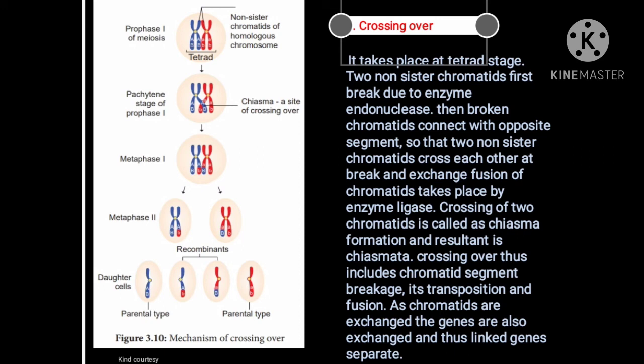A fusion of chromatids takes place by the enzyme ligase. The crossing over of two chromatids is called chiasmata formation, resulting in a chiasma. Crossing over thus includes chromatid segment breakage, its transposition, and fusion. As the chromatids are exchanged, the genes are also exchanged, and thus the linked genes separate.